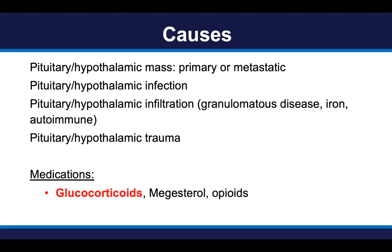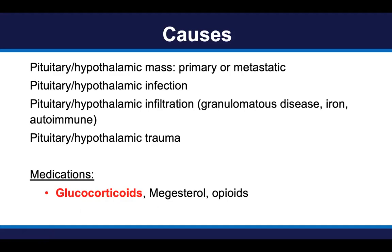Secondary adrenal insufficiency can be caused by anything that can injure or impair the hypothalamus or pituitary — a mass (primary or metastatic tumor), infection, inflammatory or autoimmune infiltration, or trauma. The most common cause by far is iatrogenic — induced by giving glucocorticoids. Glucocorticoids are widely used in medicine for their potent anti-inflammatory potential, and they interact with glucocorticoid receptors in the hypothalamus and pituitary to induce negative feedback. High-dose glucocorticoids can therefore cause secondary adrenal insufficiency as a side effect. Other medications include megestrol, often used as an appetite stimulant, and opioids, used as analgesics.